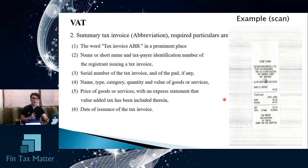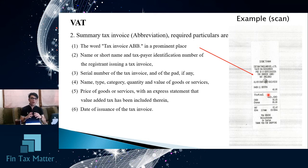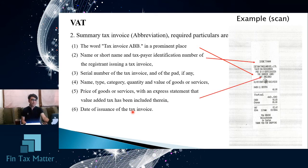For the summary tax invoice — shown in the picture as an example — the word 'tax invoice ABB' should be prominently present, along with the short name, taxpayer identification number of the registrant, serial number of the tax invoice and book if any, name, category, type, quantity, and value of the goods and service. This type does not require the VAT amount to be shown separately, but it must show the words 'VAT included.'